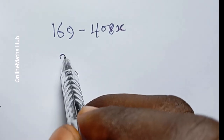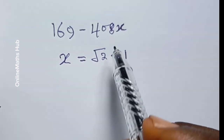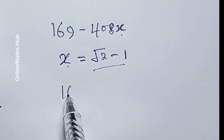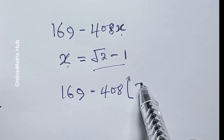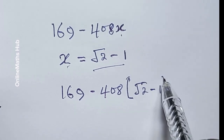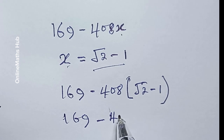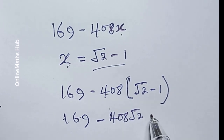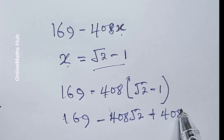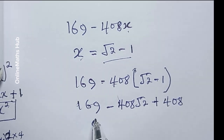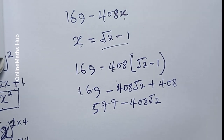Remember that we set x to be equal to √2 minus 1, so in place of x I'm replacing it back. We are now having 169 minus 408 multiplied by (√2 minus 1), which gives 169 minus 408√2 plus 408.